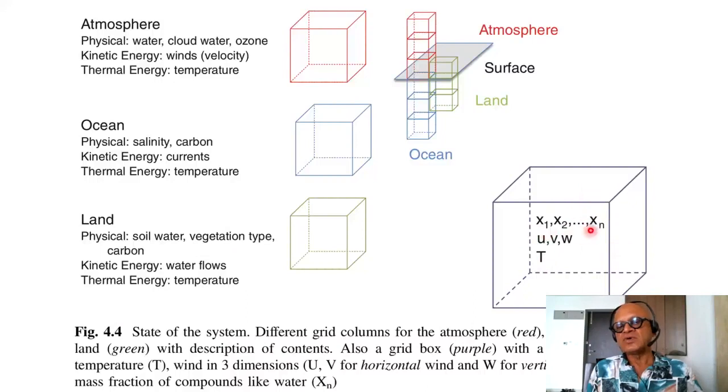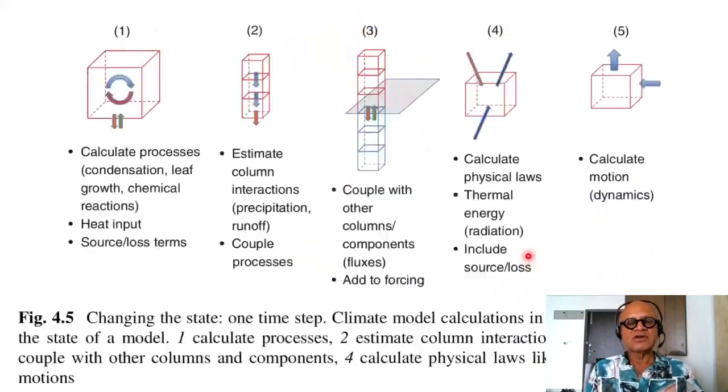You have all these variables being carried here: x1, x2 to xn, the number of grid points. U, V, W are the wind vectors in each direction and temperature is the scalar temperature quantity.